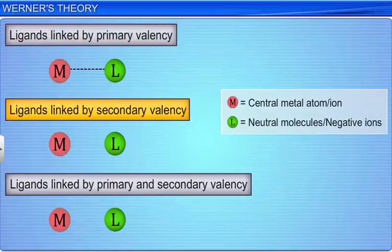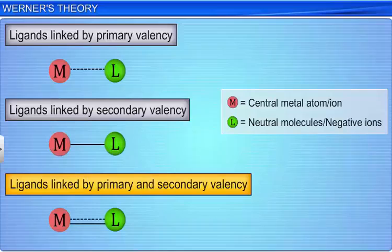If a ligand satisfies both the valencies, then it is shown by a thick as well as by a dotted line, and it is said to exhibit dual character.